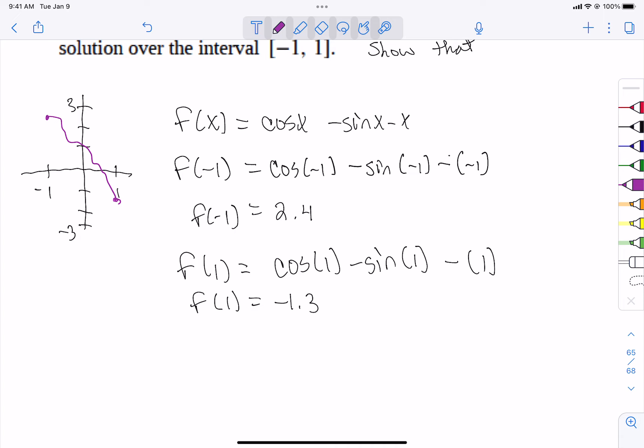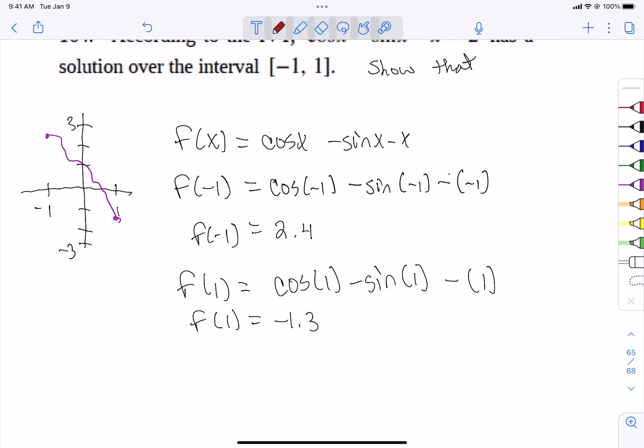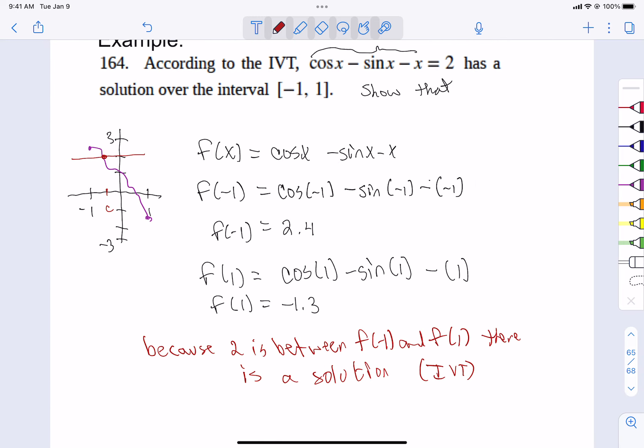The question is, show that that thing equals 2 somewhere. Right there. Do I know what that is? No. But because 2 is between f of negative 1 and f of 1, there is a solution. And again, it's because of the intermediate value theorem and the fact that these are continuous functions.